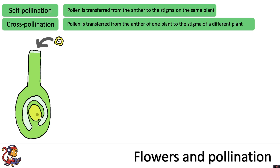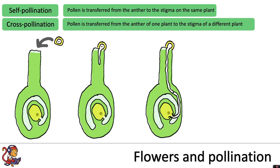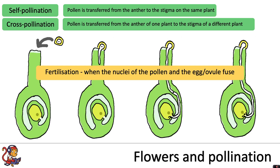The pollen will arrive at the stigma. It will attach to the stigma and if it is the correct species of plant, it will start to grow a pollen tube down the style towards the ovule. It will attach to the ovary and the nucleus of the pollen grain will start to travel down the pollen tube towards the ovule. When it reaches the ovule, the nucleus from the pollen grain will fuse with the nucleus from the ovule. This is when fertilisation happens — when the nucleus of the pollen grain and the egg or ovule fuse together. The ovule will then become the seed and the ovary around it will become the fruit.